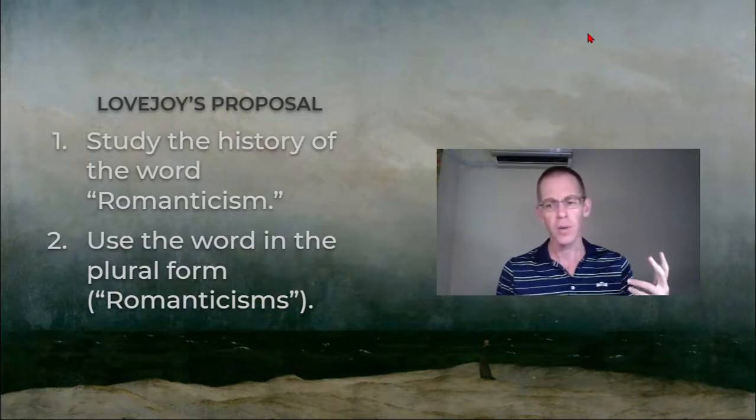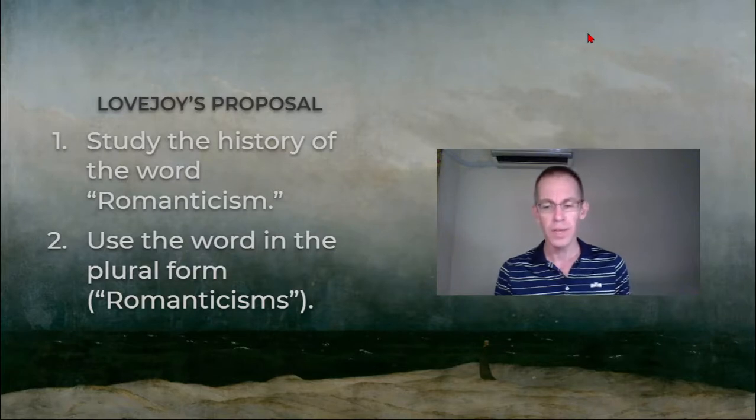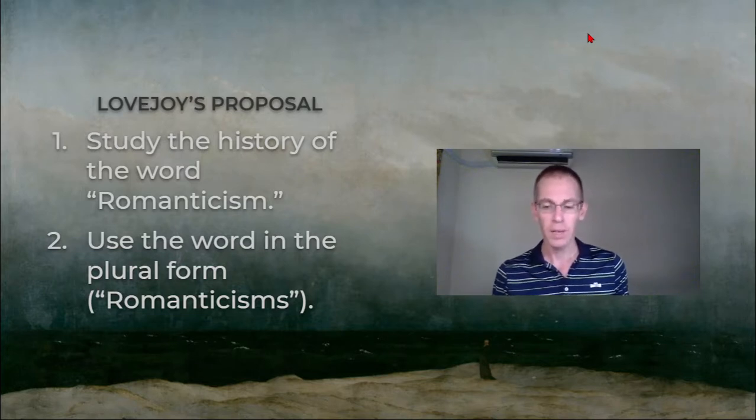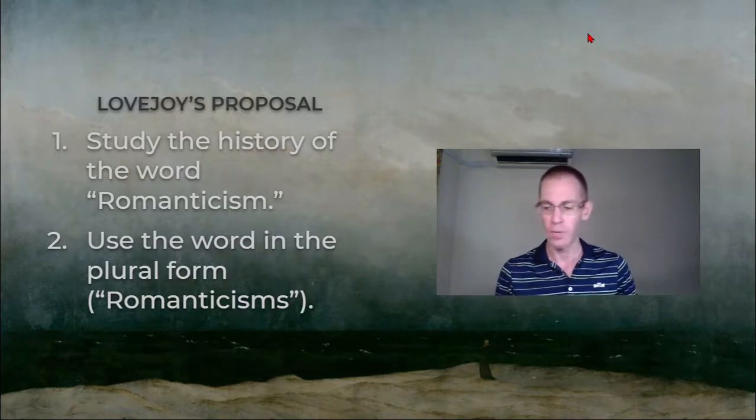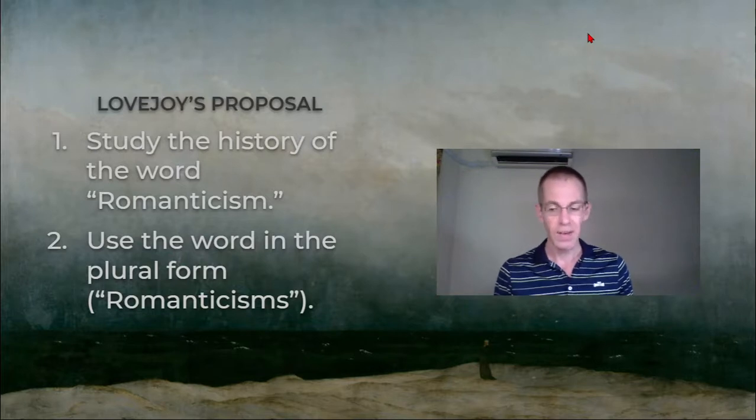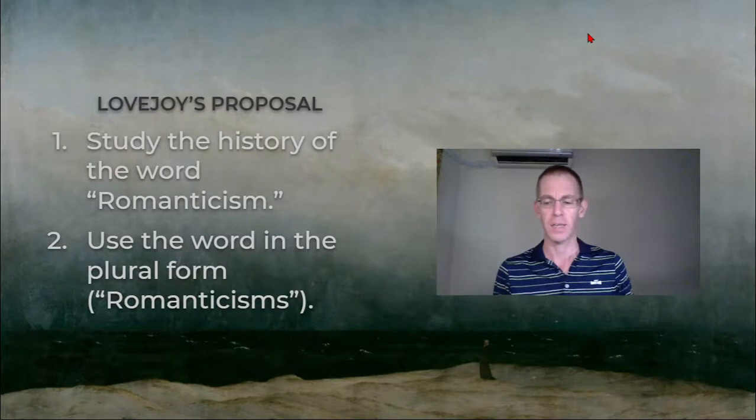Lovejoy is arguing that there is no essential romanticism when he says this—there are only things that people have called romantic or labeled as romanticism. We should not expect that all these things will fit together coherently, that they all have what he calls a common denominator. So there's no common denominator, he says, to all these different uses of romanticism. And this has been controversial.